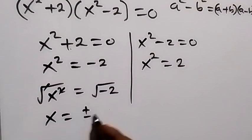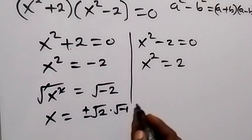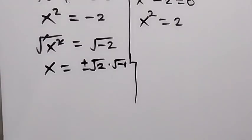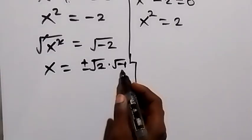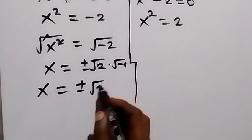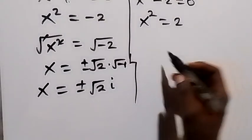we have plus or minus square root of 2, and then square root of minus 1 when we separate this. And from here we have square root of minus 1 as i. So x here is equal to plus or minus square root of 2i, where i is a complex number.